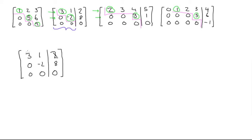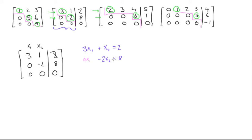When we make our system of linear equations using variables x1 and x2, we'll have 3x1 plus x2 is equal to 2. In the next row, negative 2x2 is equal to 8. When we have the zeros, they still fit in the system of linear equations — technically this would be 0x1 minus 2x2 equals 8. And the bottom row gives us 0x1 plus 0x2 is equal to 0. So that makes sense.